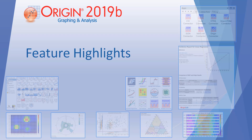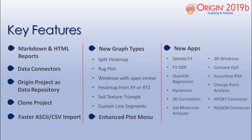This video will provide a quick overview of key new features in Origin and Origin Pro 2019b, released at the end of April 2019. Key features in this version include creating reports within Origin using Markdown or HTML syntax, data connectors — a new way of connecting to a data source from worksheets and matrix sheets — using the Origin project as a data repository, cloning the Origin project, faster ASCII and CSV data import, several new graph types, enhanced plot menu, and several new apps available free for download.